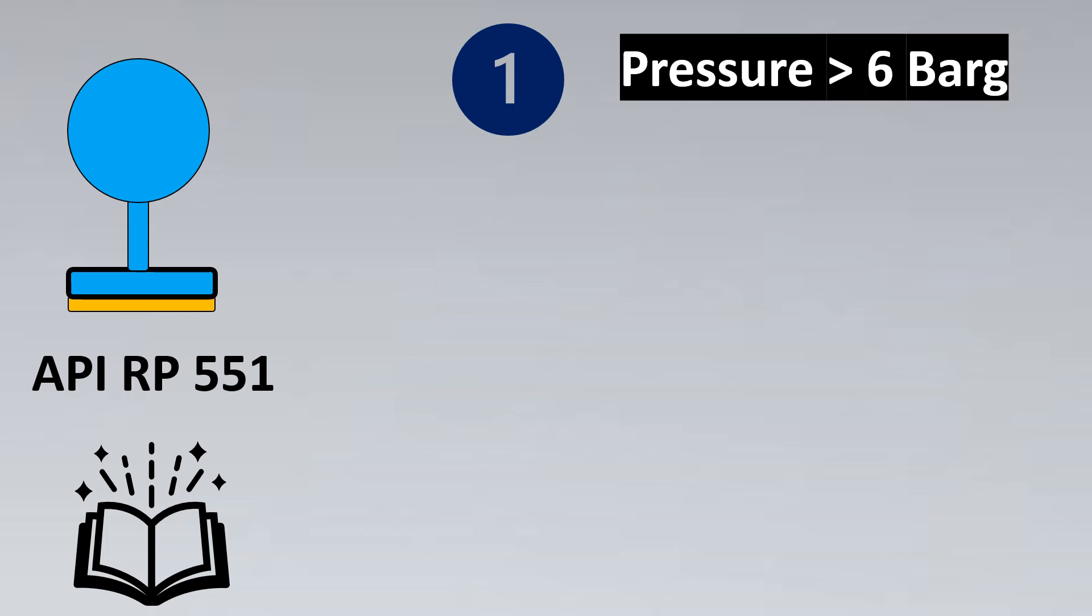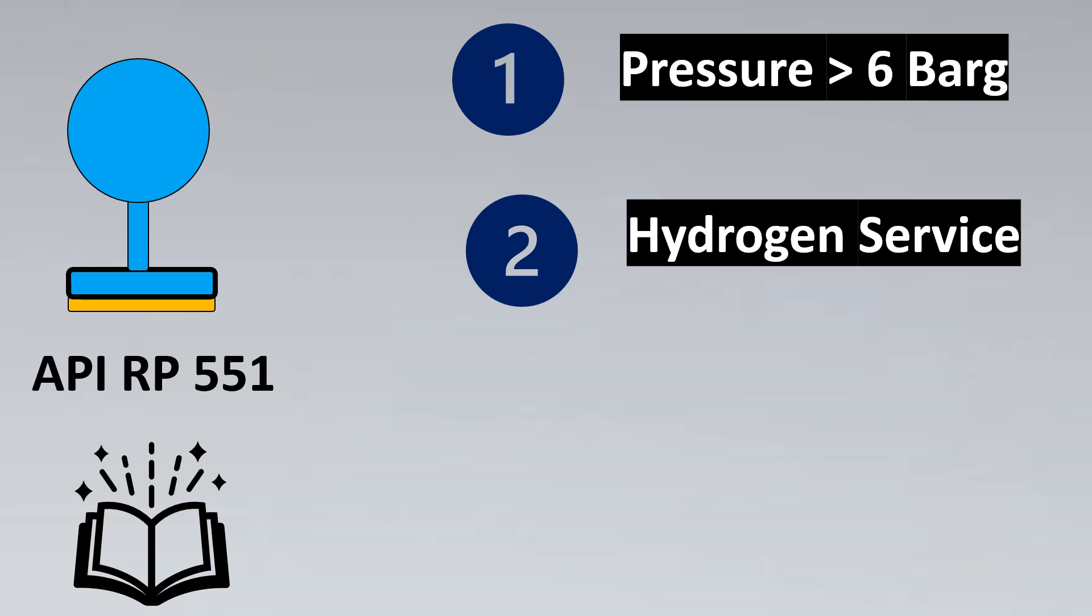Some clients go above 10 bar, some are more conservative and go above 4 bar. It depends. But if there's no client design basis available, you can go with API recommendation of pressure being greater than 6 bar. The second one is quite clear: it has to be hydrogen inside the service. So it's only when hydrogen is there you would have to consider gold plating.